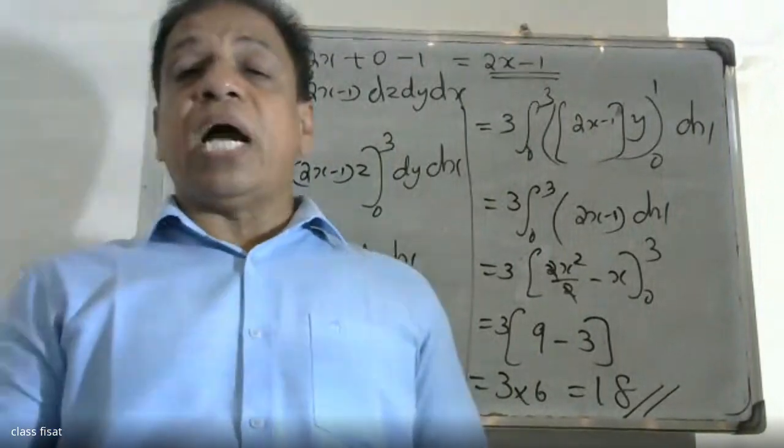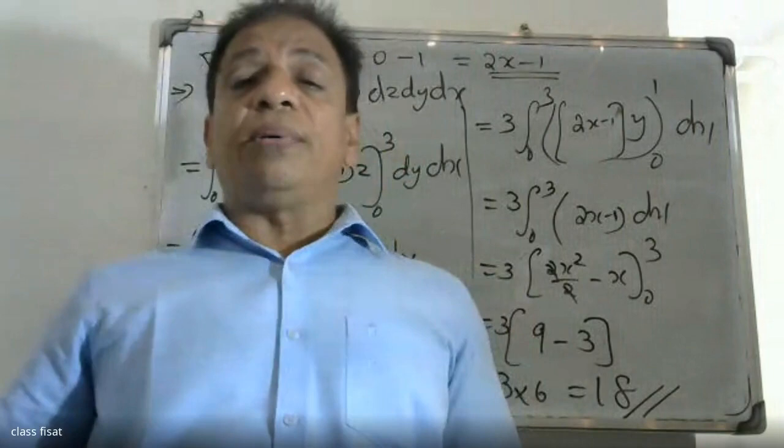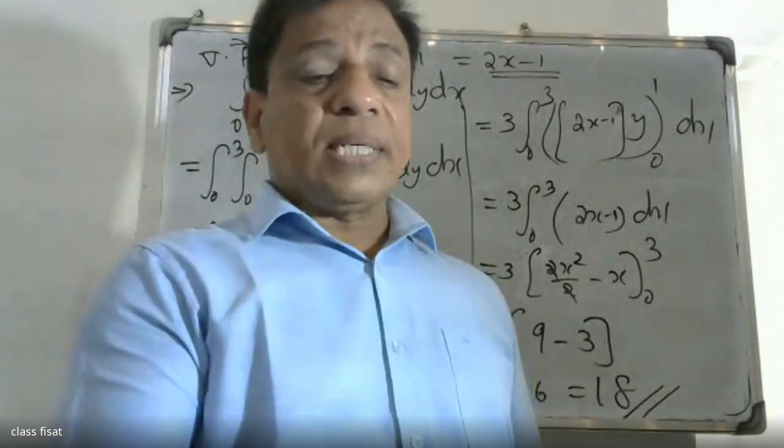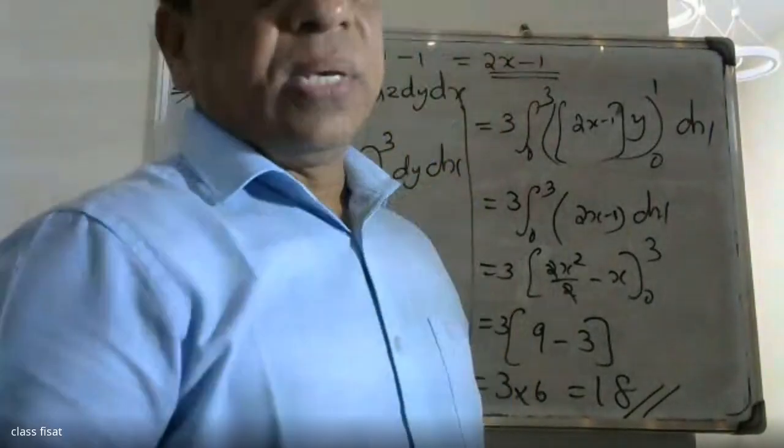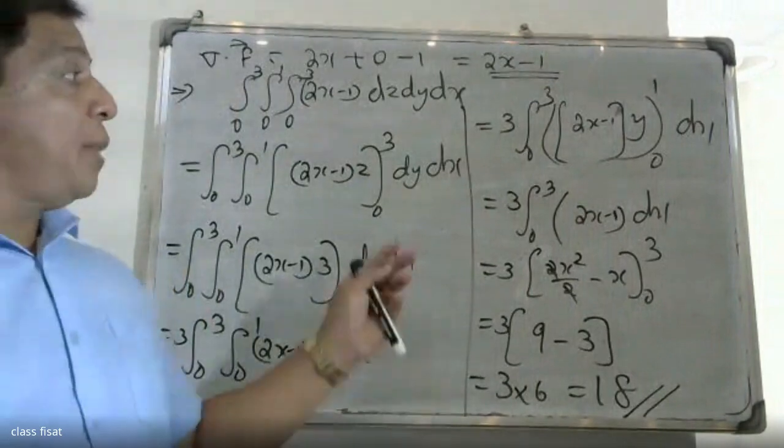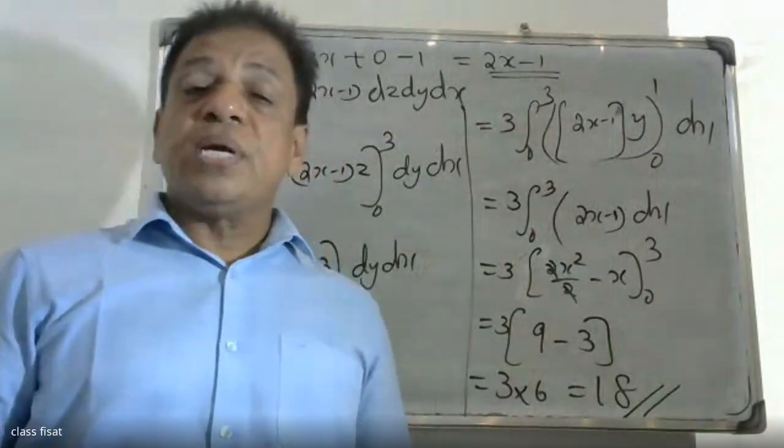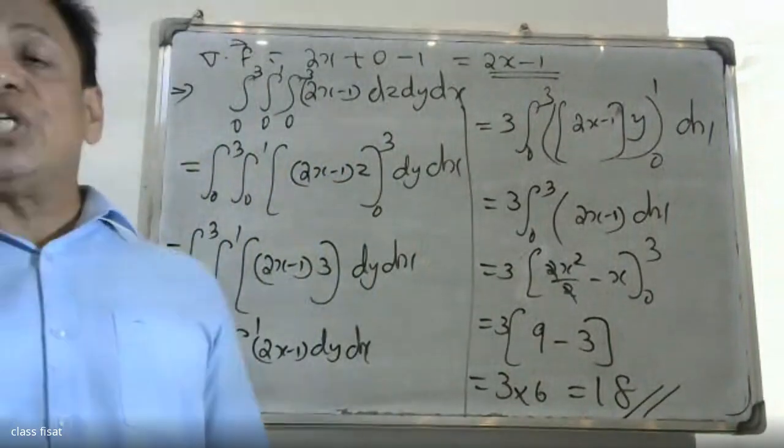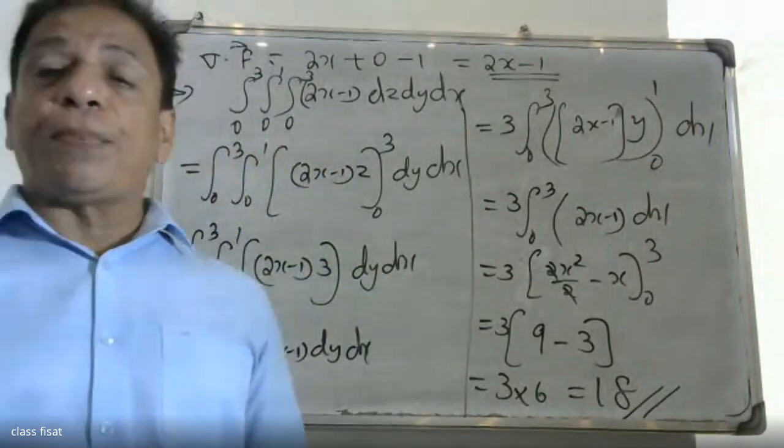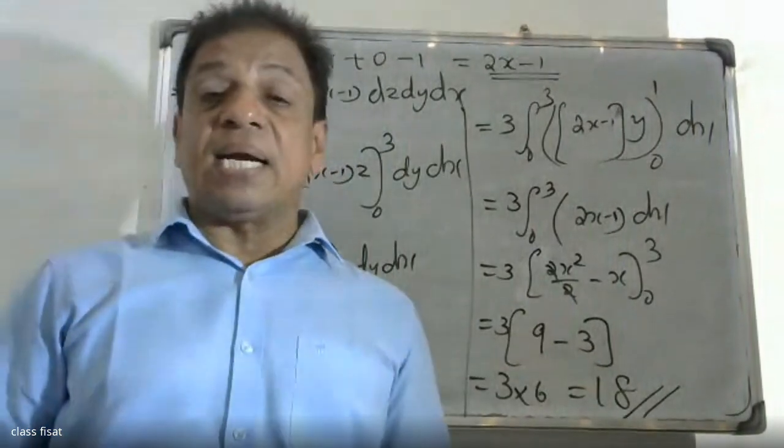The coordinate planes give us the lower limits. With x, y, and z having lower limit zero, the upper limit is 3 for x, 1 for y, and 3 for z. That is why we use these limits when we integrate. The final answer is 18.